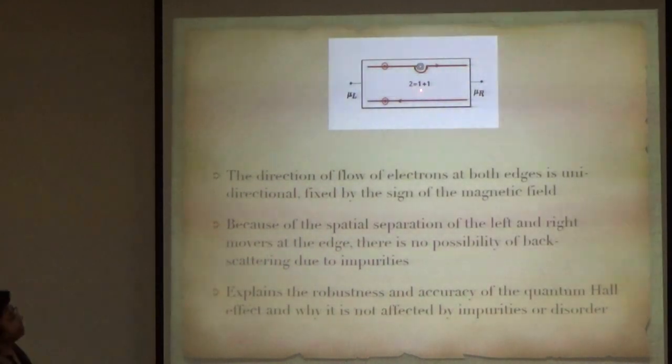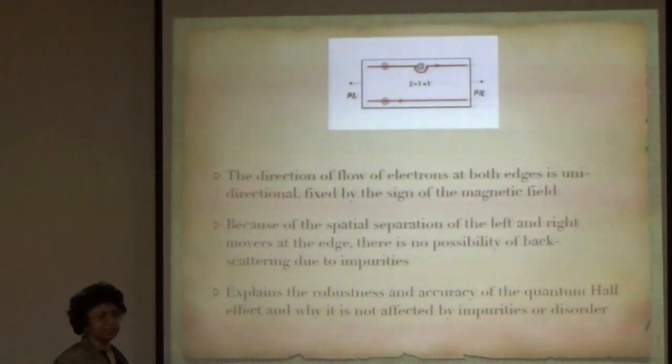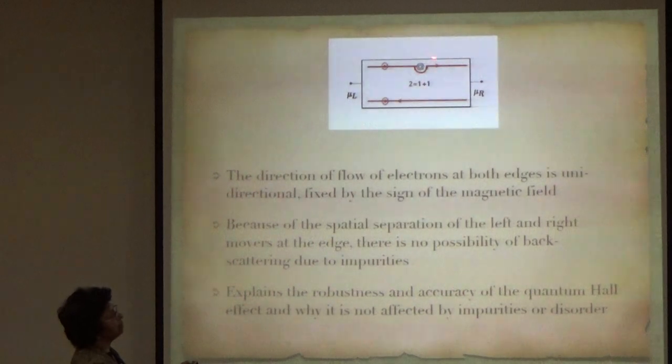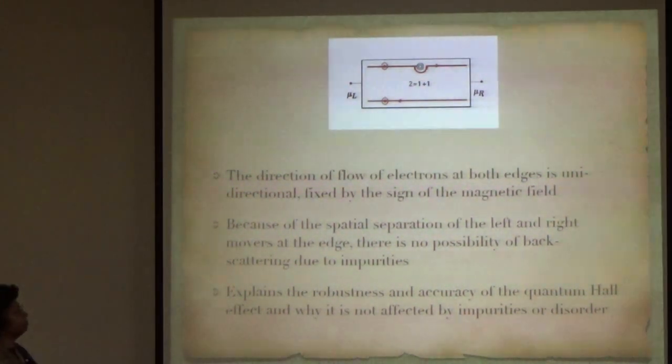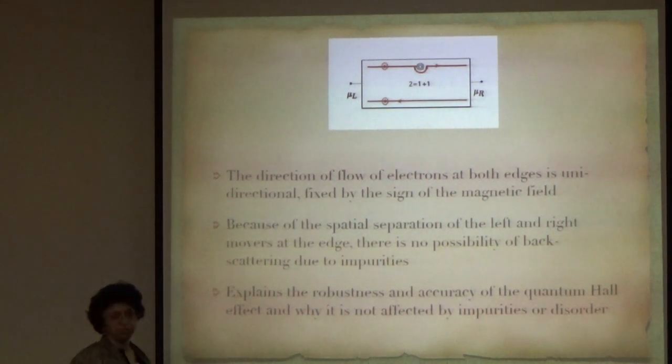Because the right movers and the left movers are spatially separated, even if you have any kind of disorder in the system, the electrons prefer to go around it and cannot backscatter. This explains the accuracy and the robustness of the quantum Hall effect, and why it is not affected by impurities or disorder. This was the old understanding of quantum Hall effect.